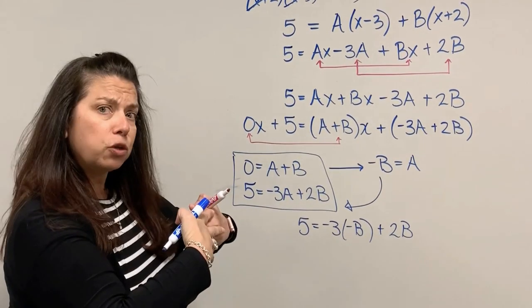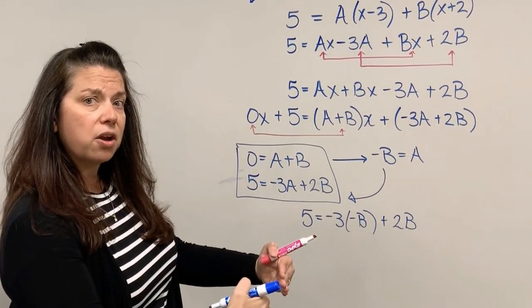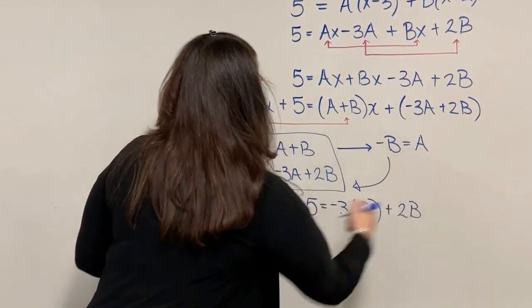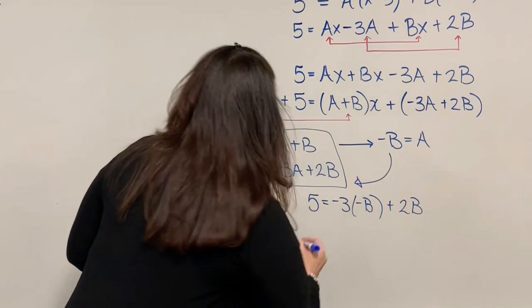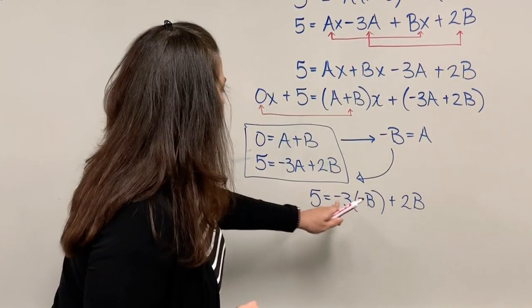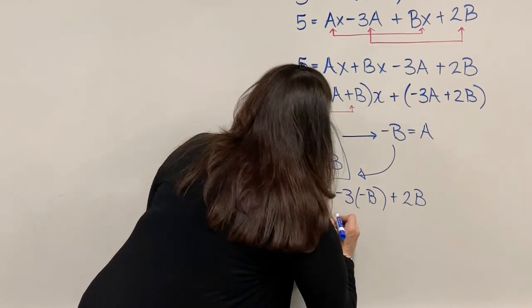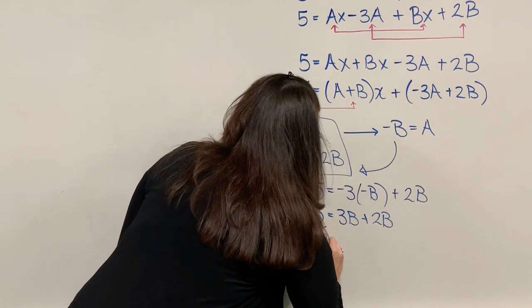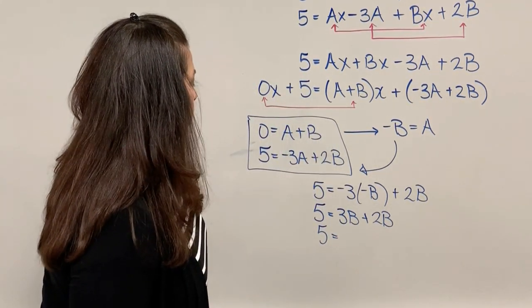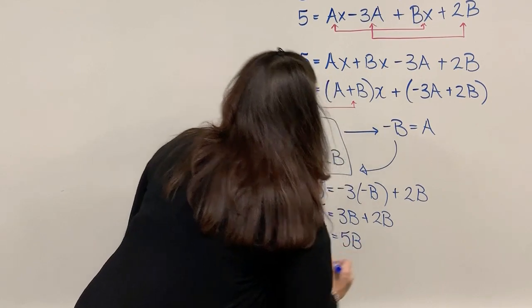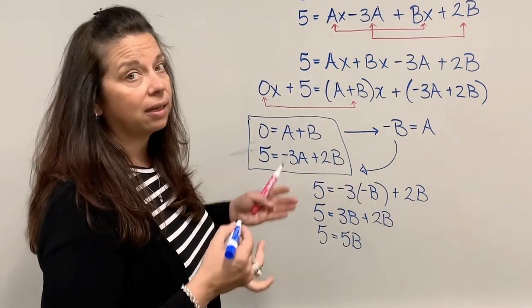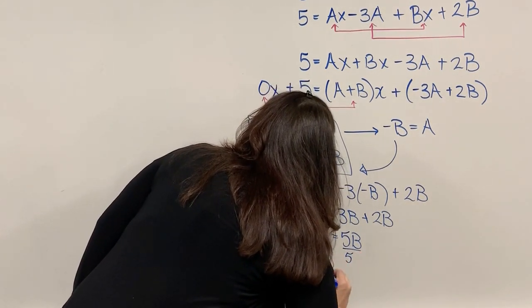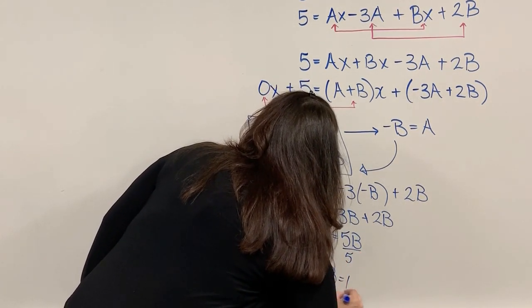By doing that, I've collapsed my two equations into one equation with one unknown. If I continue solving this equation, 5 = 3B + 2B, which means 5 = 5B, which must mean that B is exactly 1.